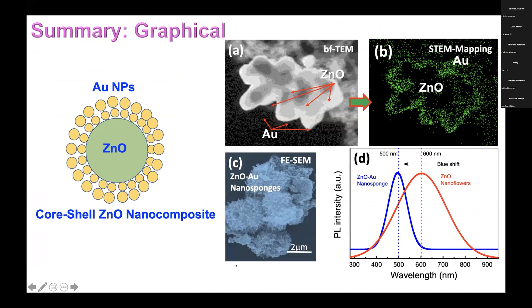This is a graphical summary showing the core-shell zinc oxide nanocomposite, or gold-encapsulated zinc oxide. The graphical abstract shows the BF-TEM image of gold and zinc oxide, and the STEM mapping of gold, where zinc oxide is in the middle encapsulated by the gold. The SEM image shows nanosponges, and a blue shift was obtained from 600 to 500 nm.